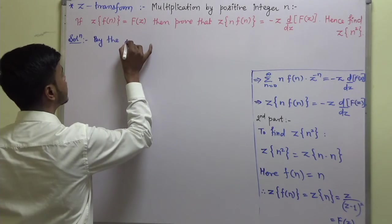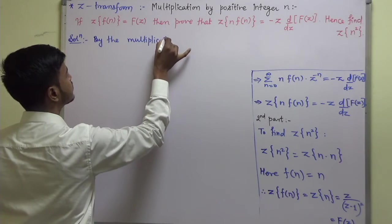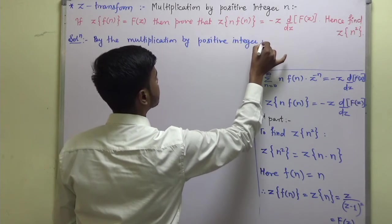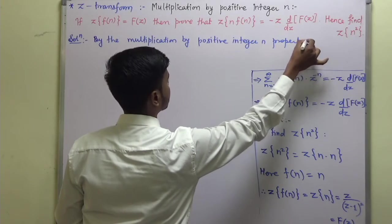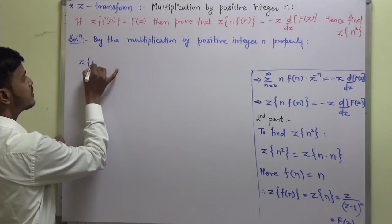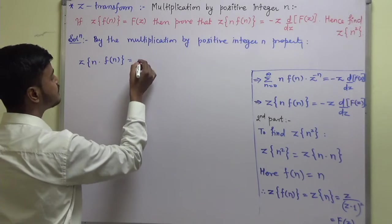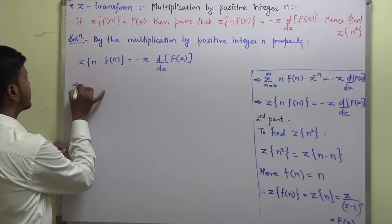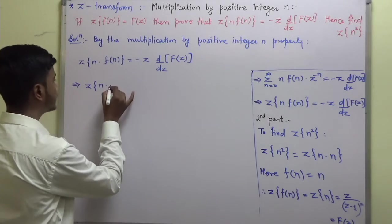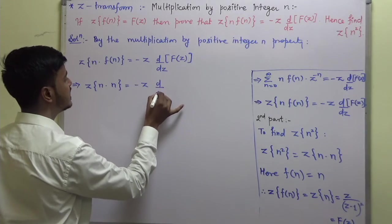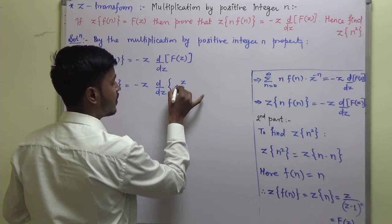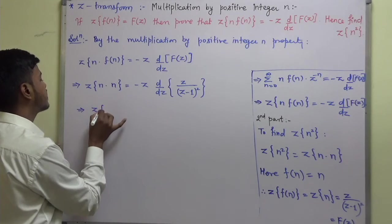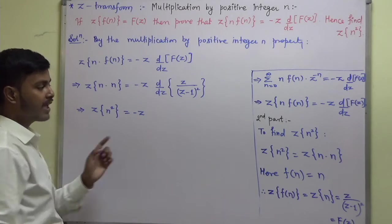By the multiplication by positive integer n property, Z transform of n·f(n) equals minus z times d/dz of F(z). Substituting: Z transform of n·n equals minus z times d/dz of [z divided by (z minus 1) squared]. Now apply the quotient rule of derivative.